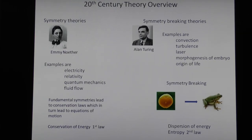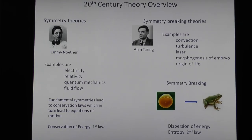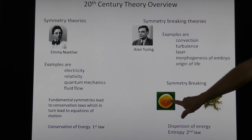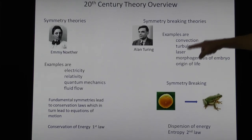If you start things in an unlikely initial condition — not the most random one — you can get something called symmetry breaking. A fertilized egg is fairly symmetrical but a frog certainly is not a sphere — that's the origin of the term; you're breaking the symmetry. Other examples: convection, turbulence, lasers, morphogenesis — all examples of symmetry breaking, and all the interesting things you see around us in the world.